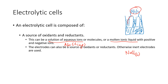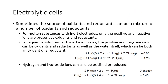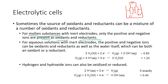Sometimes the source of oxidants and reductants is a mixture of multiple species. For molten substances with inert electrodes, only the positive and negative ions are present as oxidants or reductants. For example, in molten sodium chloride you only have Na⁺ and Cl⁻ ions. However, for an aqueous solution with inert electrodes, the positive and negative ions can be oxidants or reductants, and so can the water itself.